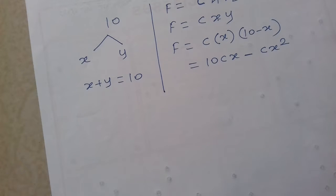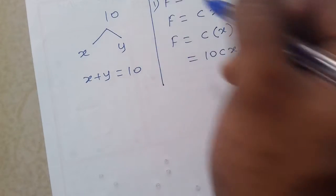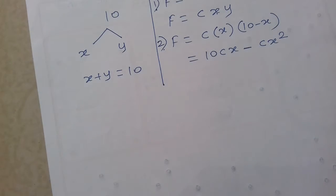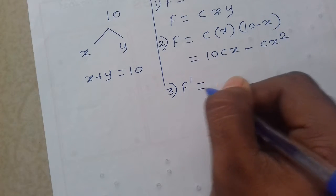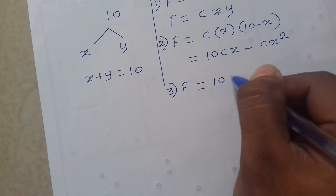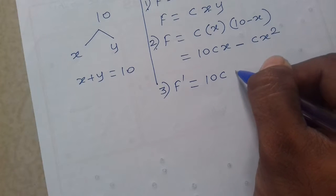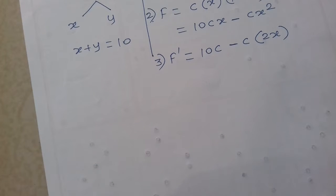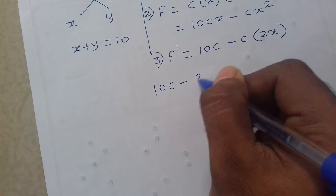C is a positive constant - c kya hai positive constant, like plus 2, plus 3, plus 5, kuch toh positive value. This is the first step. Second step is assumption of function with one variable. Third step mein pahila derivative nikalna hai and that should be zero. First derivative of 10Cx minus Cx squared: constant 10C as it is, minus C into derivative of x squared is 2x. So first derivative is 10C minus 2Cx.